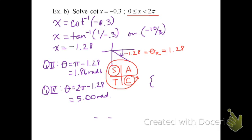So our solution set for this particular example in radians is 1.86 and 5.